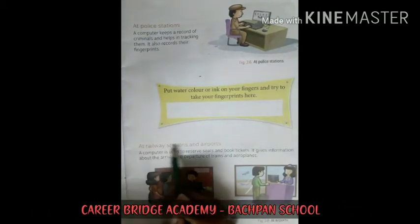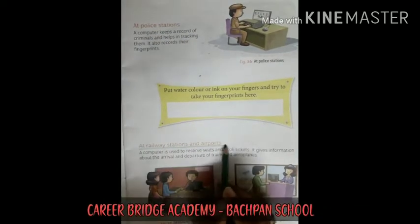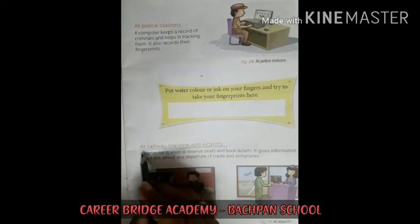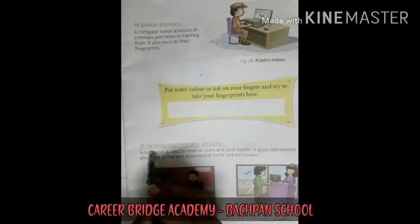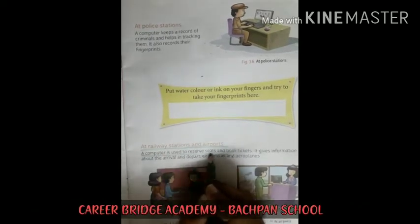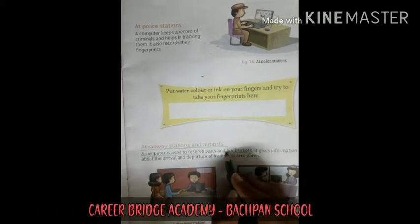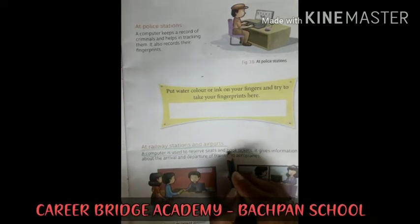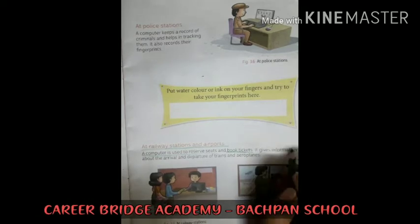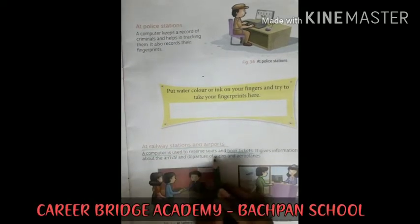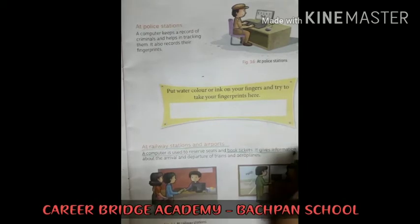At railway stations and airports, a computer is used to reserve seats and book tickets. It also gives information about the arrival and departure of trains and aeroplanes.